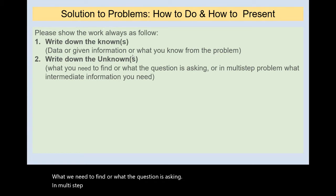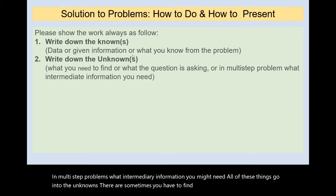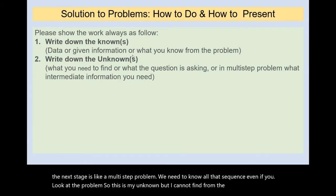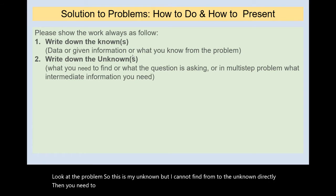All of these things go into the unknowns. Sometimes you have to find one information and then use it for the next, like a multi-step problem. You need to know all that sequence. Even if you look at the problem and say this is my unknown, but you cannot find from the known to the unknown directly, then you need to find what are the intermediary unknowns and write them down.